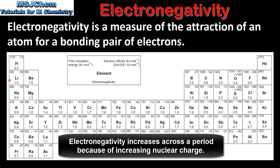Electronegativity increases across a period because of the increasing nuclear charge. The nuclear charge is the number of protons in the nucleus of an atom, and it increases by 1 as we go from left to right in the periodic table. The increasing nuclear charge results in a stronger attraction between the nucleus and the bonding electrons.